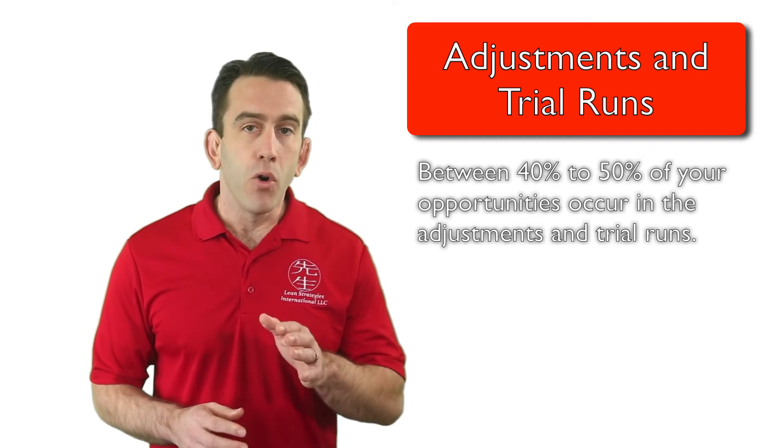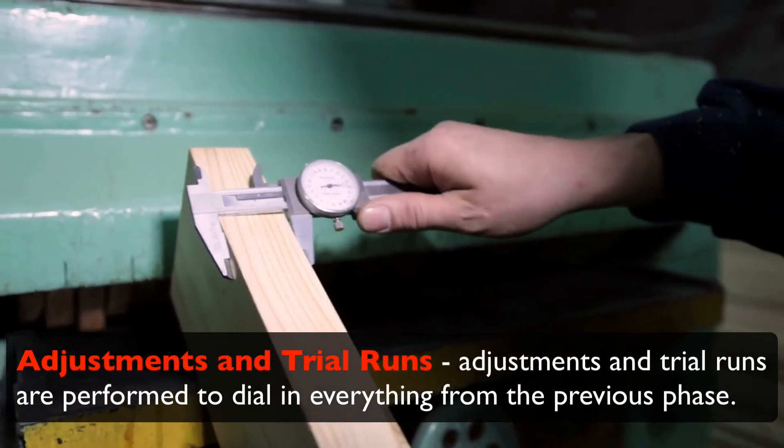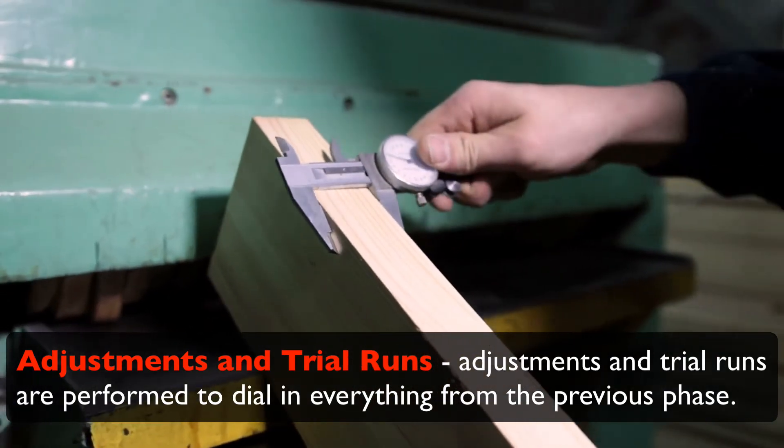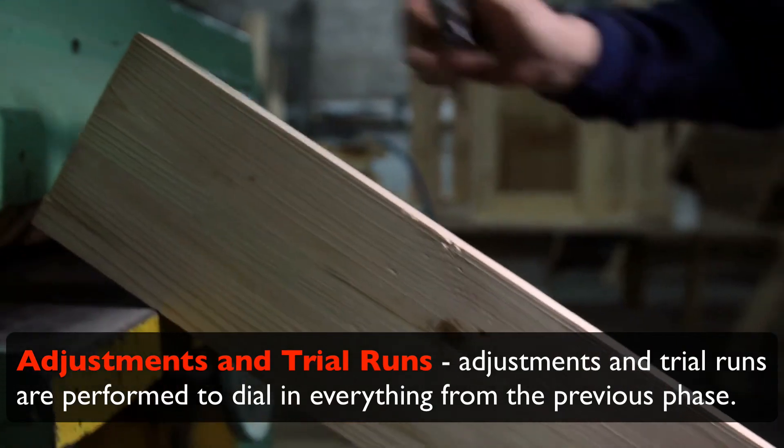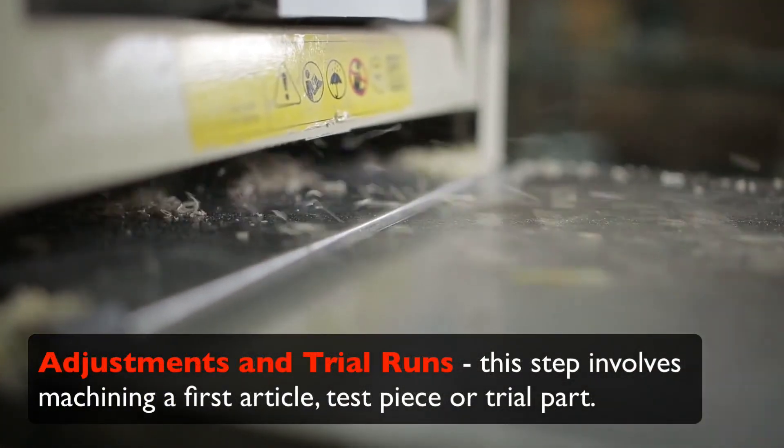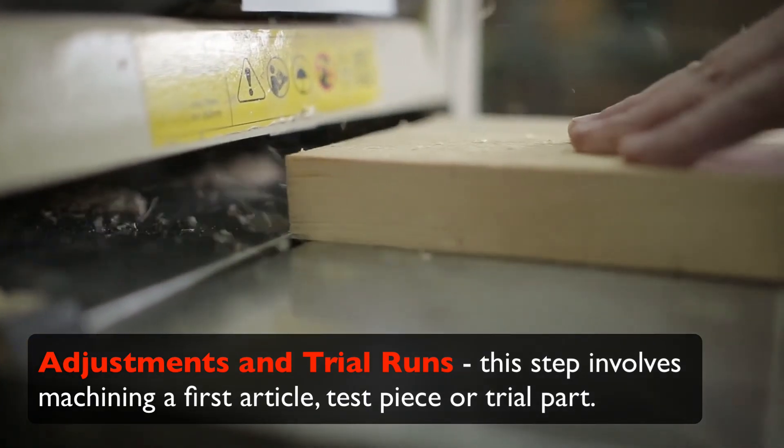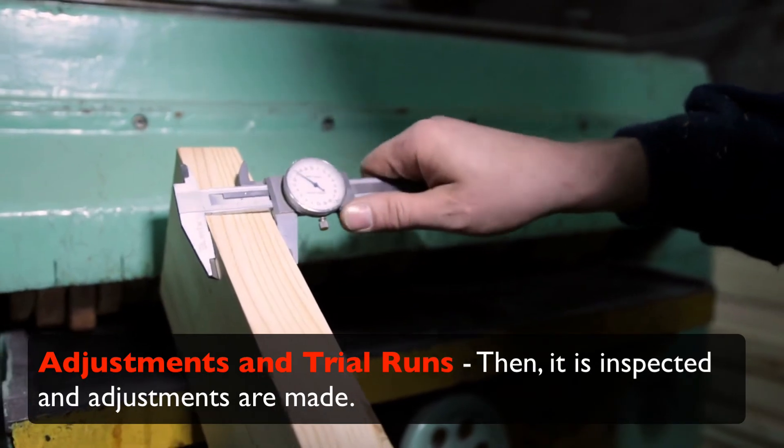The final phase of a traditional setup is the one that traditionally takes the most time. In phase four, adjustments and trial runs are performed to dial in everything from measurements, calibration, and the settings phase. In general, this step involves machining a first article, test piece, or trial part, then it is inspected and adjustments are made.